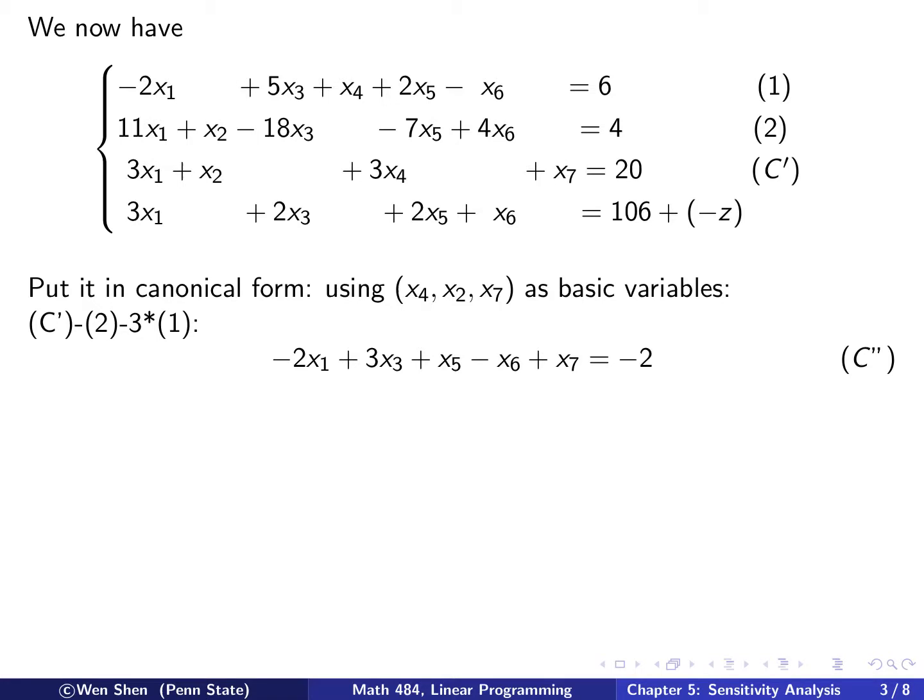After that discussion, we see that we would like to keep X4, X2, and X7 as basic variables. And we need to put the constraints in canonical form. So the last one needs some manipulation. What we could do would be, we could multiply the second one by negative one, and add it on C prime, and then the first multiply by negative three, and then add it on C prime. Then these two terms will be gone.